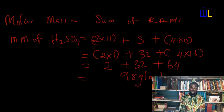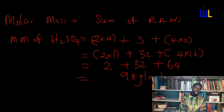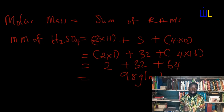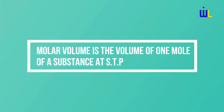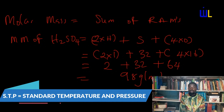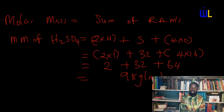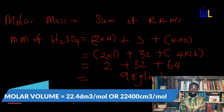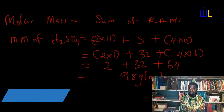In parts like Nigeria and the UK, we use cm³ and dm³. In America, litre, centilitre, and millilitre are more commonly used. Whenever you see any of these quantities mentioned, you are talking about volume. It is also important you understand what molar volume is. The molar volume of a substance is simply the volume of one mole of a substance at STP. It has a constant value of 22.4 dm³ per mole, or 22,400 cm³ per mole.